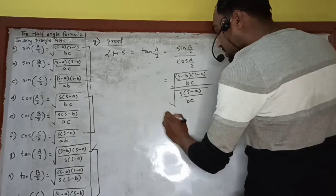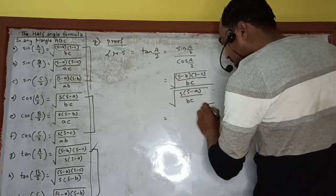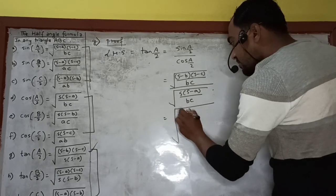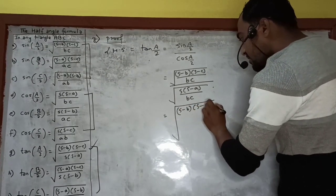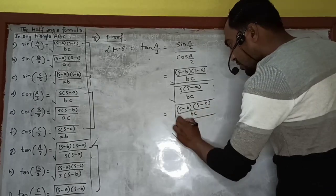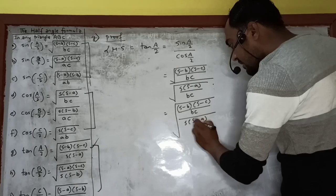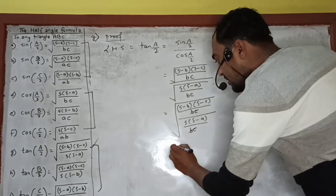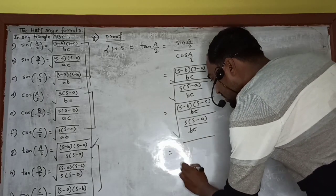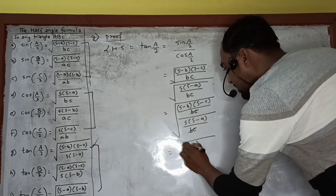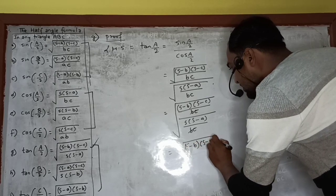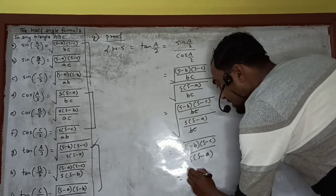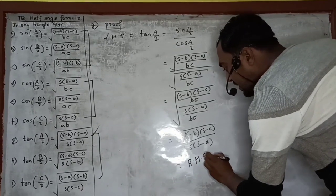We can write one combined square root: √[(S − B)(S − C) / BC] divided by √[S(S − A) / BC]. The BC terms cancel, leaving √[(S − B)(S − C) / (S(S − A))], which equals the right hand side. Hence tan(A/2) = √[(S − B)(S − C) / (S(S − A))]. Proved.